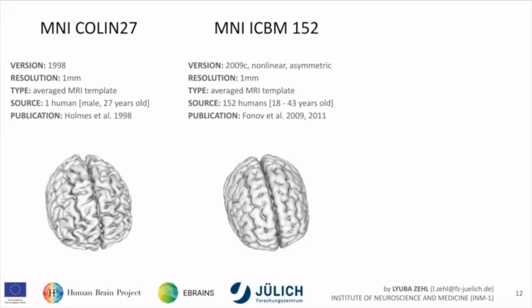We're also supporting the MNI ICBM 152, but a particular version — there are nine versions out there of the MNI ICBM 152. As a data curator, if people provide me data and say it's in MNI 152 space, I'm a bit puzzled, so versions are important. This is an average MRI template of 152 humans; the original publication was in 2009 and there was an update in 2011. The Colin 27 has much more defined sulci than the average brain across 152 humans, which comes from inter-subject variability.